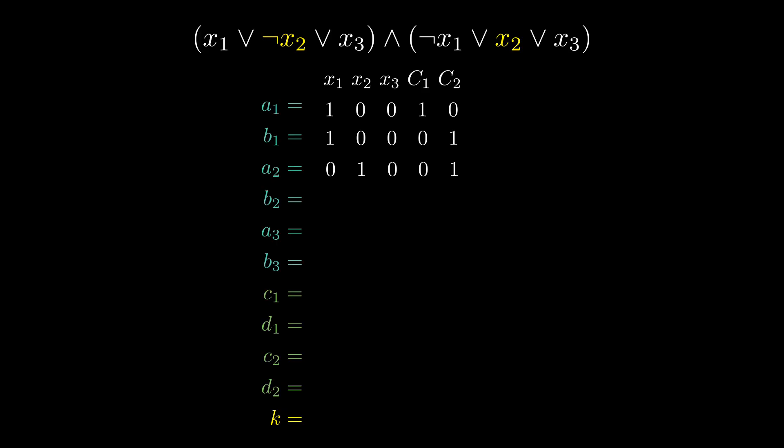If a clause C_i contains the variable x_i, then the digit of a_i associated with C_i is set to 1; otherwise it's set to 0. Similarly, if a clause C_i contains the negation of the variable x_i, then the digit of b_i associated with C_i is set to 1; otherwise it's set to 0.